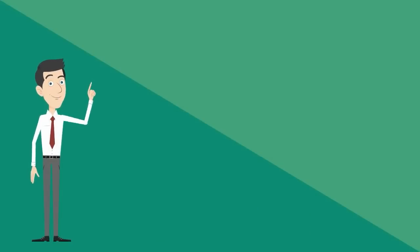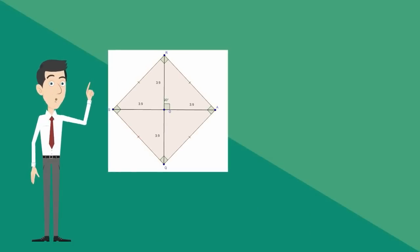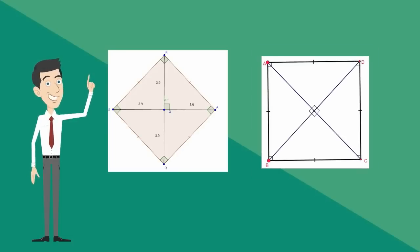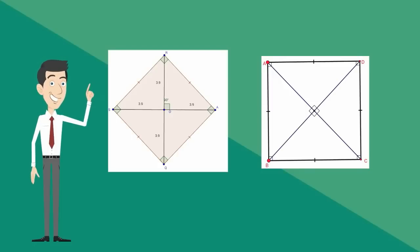And finally, a square could be described as a rhombus with four right angles, or a rectangle with congruent sides.